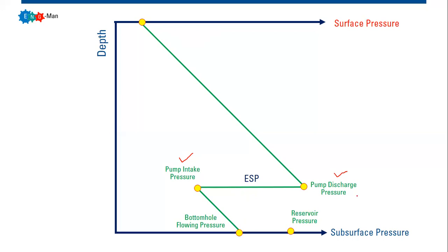From pump discharge pressure, the fluid travels upward and finally reaches the wellhead flowing pressure, which is of course lower than the pump discharge pressure due to the elevation difference and pressure drop along the tubing. The fluid can only flow if the wellhead flowing pressure is lower than the pump discharge pressure.